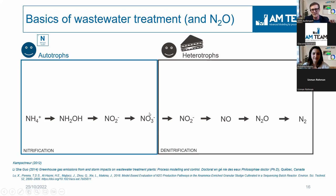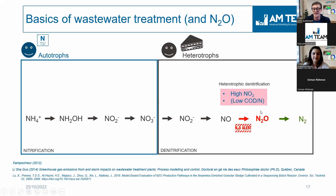Then, if you feed the nitrates to heterotrophs, which eat organic carbon as a source — more comparable to humans — they bring the nitrogen back to nitrogen gas. The autotrophs don't eat organic carbon; that's why nitrogen is the source here. This conversion to nitrogen gas is, of course, not a greenhouse gas. But in the process, there is a sidestep or intermediate called nitrous oxide. This is a first take-home: the heterotrophs have one pathway of N2O formation, which is part of their core business.